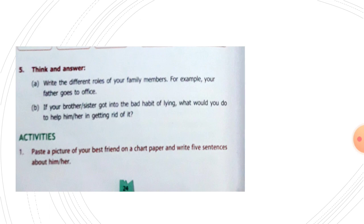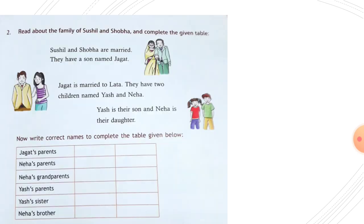Next page — this is page number 25. Read about the family of Sushil and Sova and complete the given table. Sushil and Sova are married. They have a son named Jagat. Jagat is married to Lata. They have two children named Yash and Neha. Yash is their son and Neha is their daughter. Now fill the table.